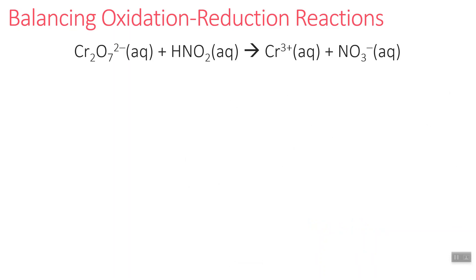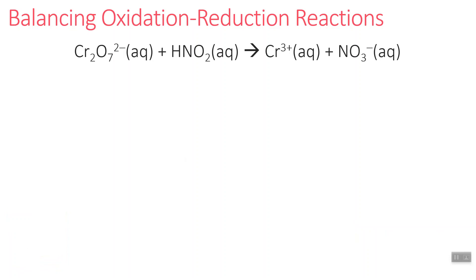So we want to balance this chemical equation. The first thing we want to do is figure out some oxidation states. From our oxidation rules, oxygen is going to be minus two, which means chromium has to be plus six. We have seven oxygens giving minus 14, and a minus two charge overall, so the two chromium atoms must add up to plus 12 — that's plus six each.